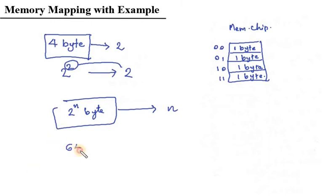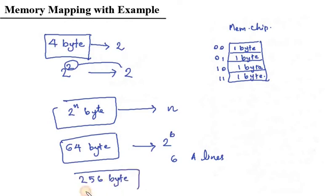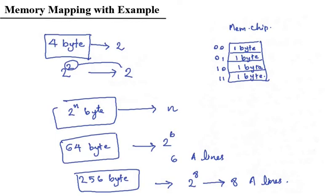For example, if we have a memory chip of 64 bytes, then since 64 is 2 raised to 6, we need 6 address lines. And if we have a 256 byte memory chip, then since 2 raised to 8 equals 256, we need 8 address lines. Next we will do some problems and then in the next part we will discuss memory mapping in detail.